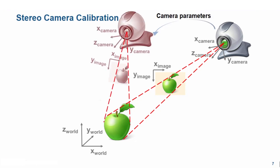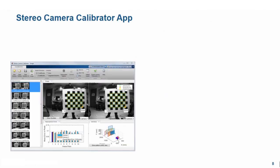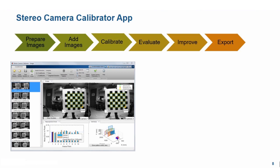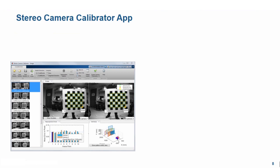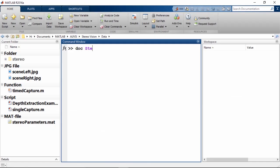A stereo system consists of two cameras, so in addition to traditional calibration, we also need to calibrate the orientation of camera 2 relative to camera 1. In MATLAB, there is a Stereo Camera Calibrator app which estimates the parameters of each of the two cameras. There are 6 steps in the process of Stereo Camera Calibration. The first step, prepare images, needs you to prepare a checkerboard pattern. The computer vision system toolbox provides a function for segmenting the checkerboard, which is also used by the Stereo Camera Calibrator app.